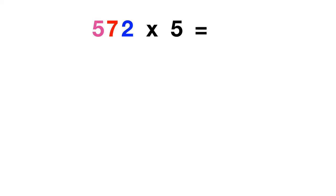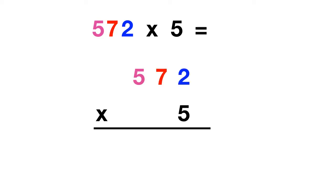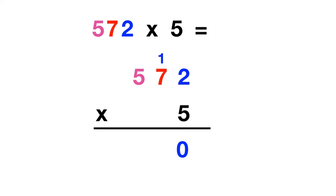Now it's time for you to practice on your own. Use this standard method to figure out what 572 times 5 equals. If you write out 572 times 5, you can start by multiplying 5 times 2. 5 times 2 gives us 10. Then you can multiply 5 times these 7 tens. 5 times 7 is 35, plus this 1 is 36.